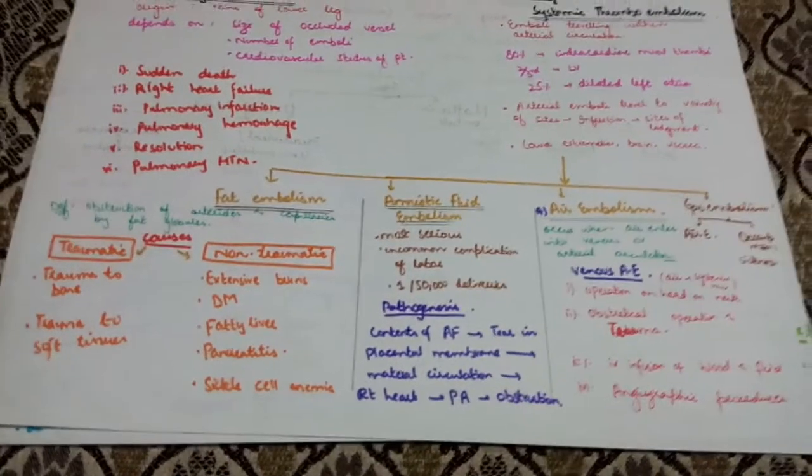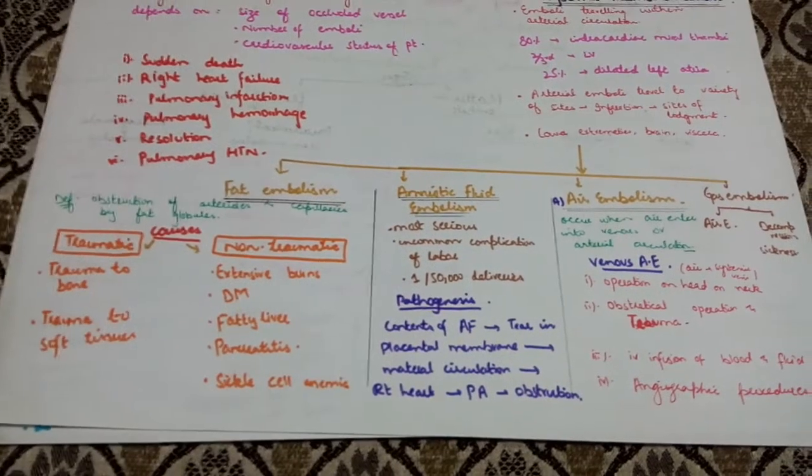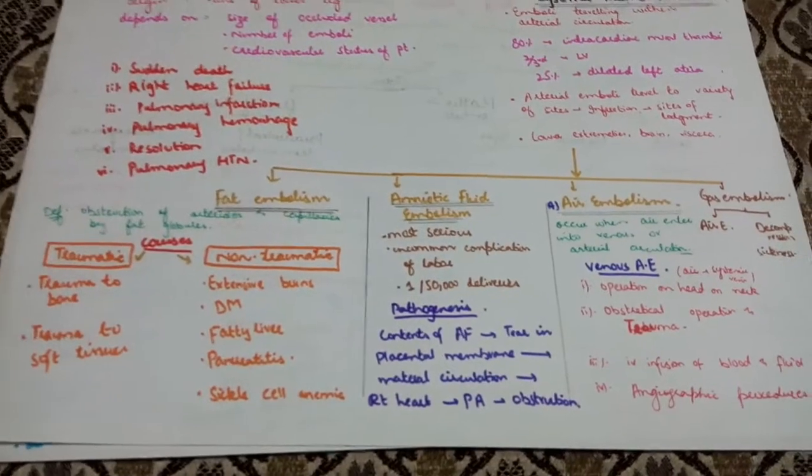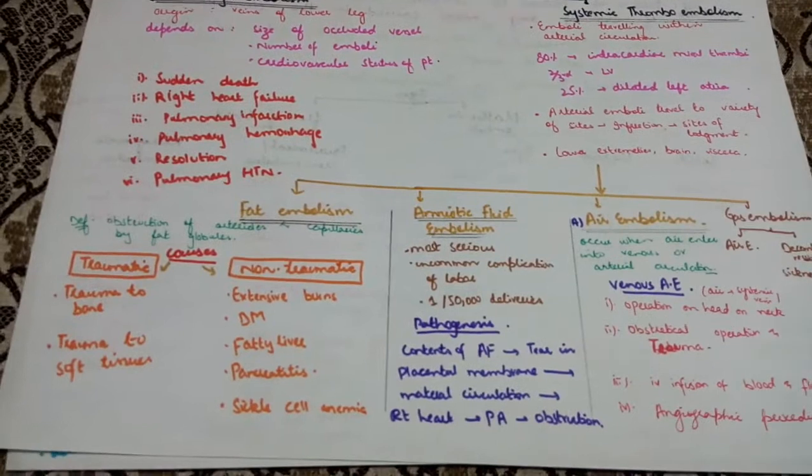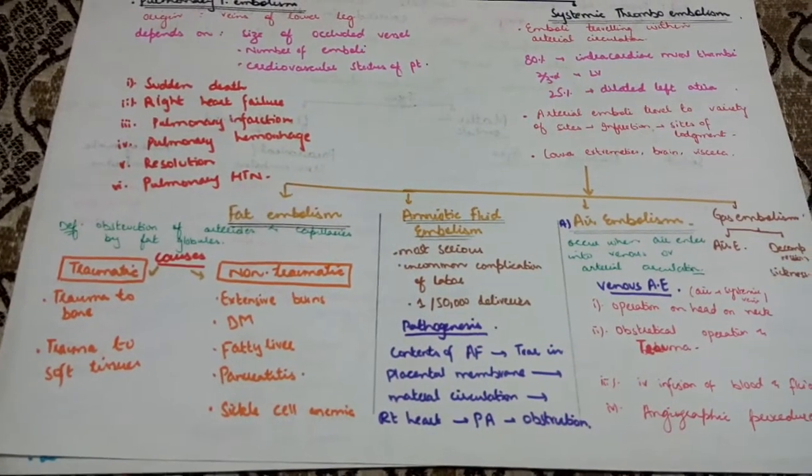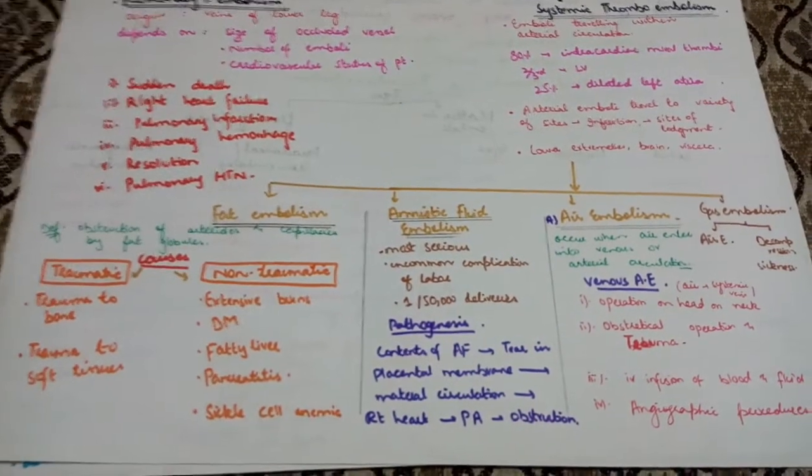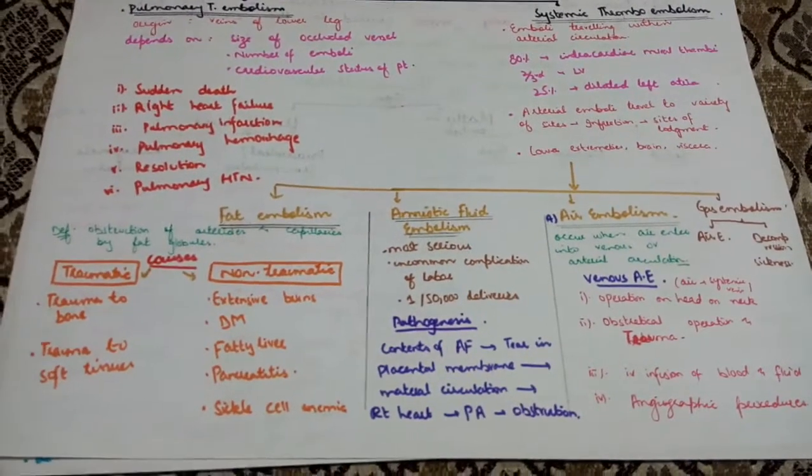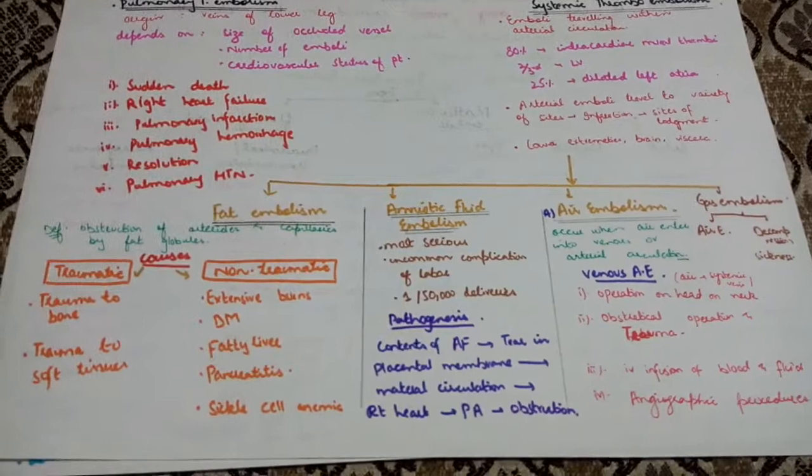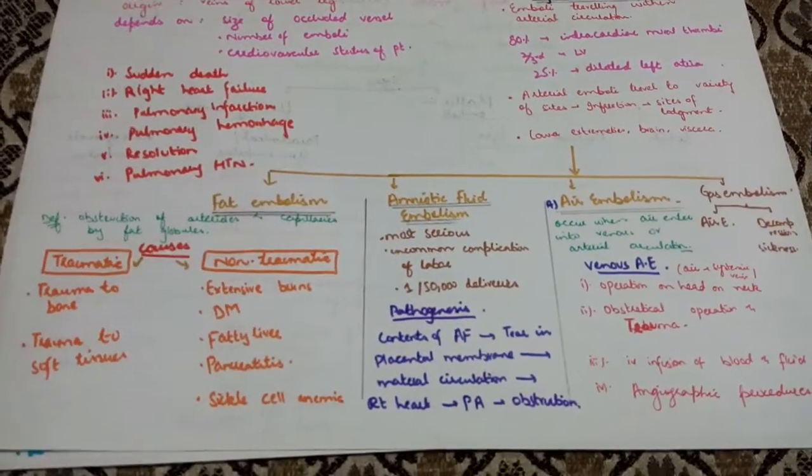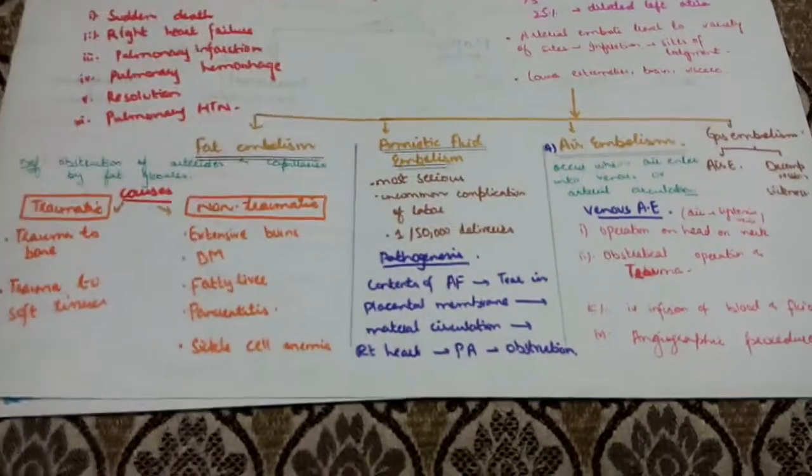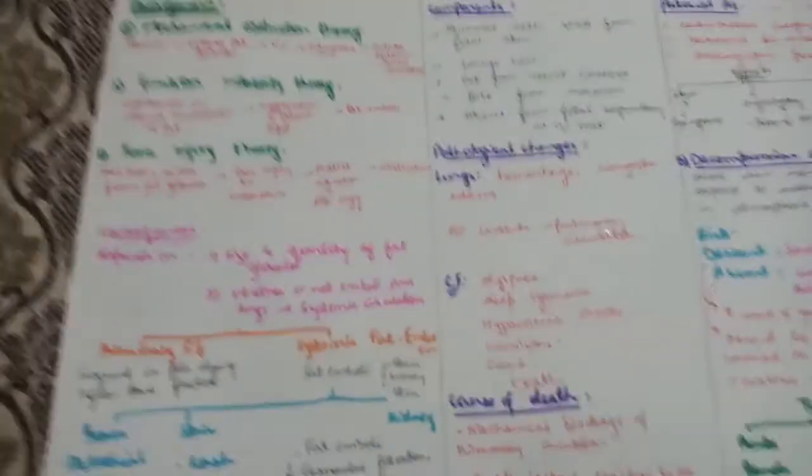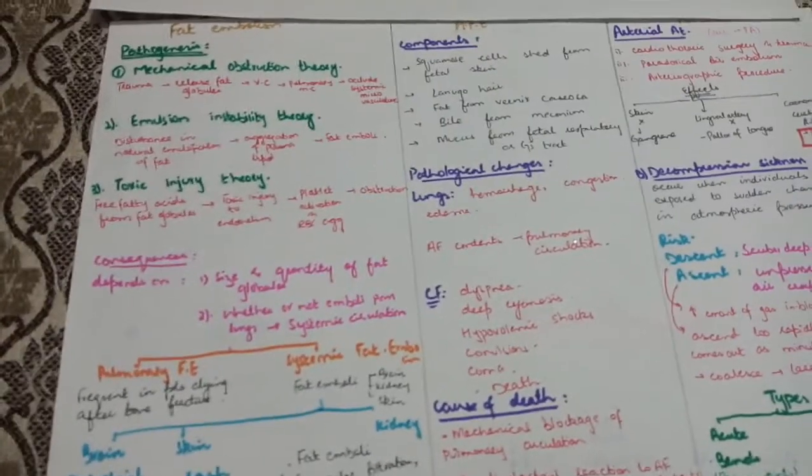First is fat embolism. Fat embolism is obstruction of arterioles and capillaries by fat globules. Causes include trauma such as bone fracture, long bone, orthopedic surgical procedures, and soft tissue damage to adipose tissue. Non-traumatic causes include extensive burns, diabetes mellitus, fatty liver, pancreatitis, and sickle cell anemia.